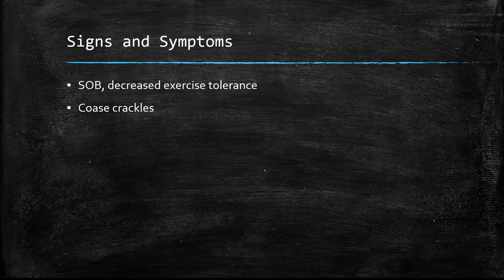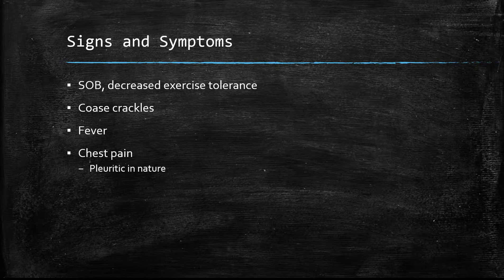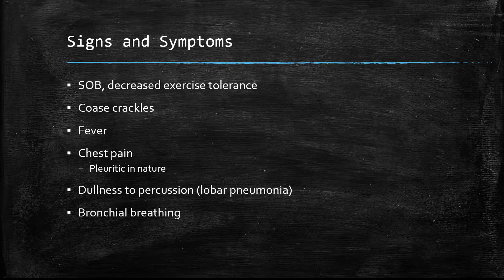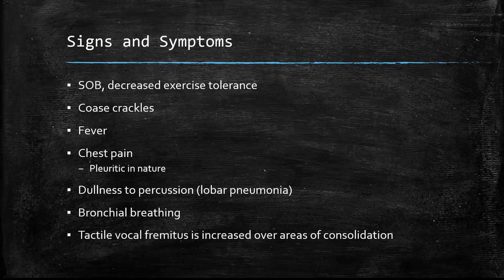Coarse crackles can also be heard on auscultation. Fever is often present, and chest pain may be pleuritic in nature, especially if there is a pleural effusion. In lobar pneumonia, once it progresses to a certain stage, you can also find dullness to percussion on examination. Bronchial breathing is common, and tactile vocal fremitus is increased over areas of consolidation. This is because sound travels better through the consolidated, fluid-filled area of the lung as opposed to a normal healthy lung.